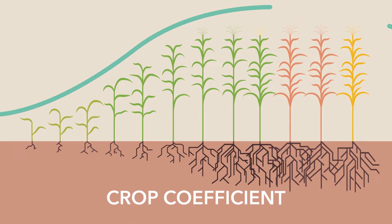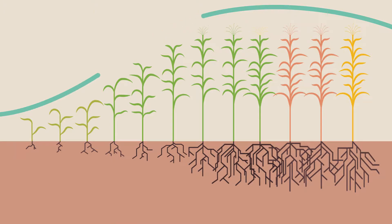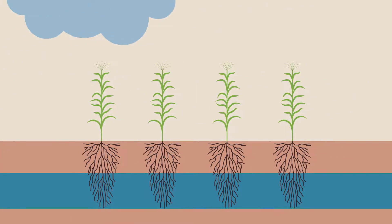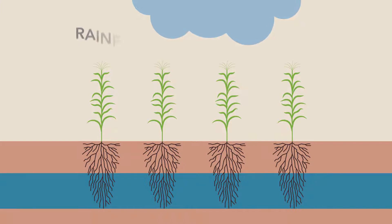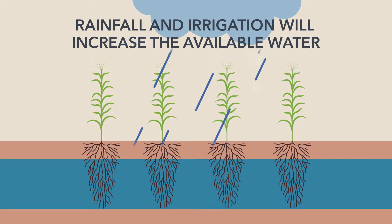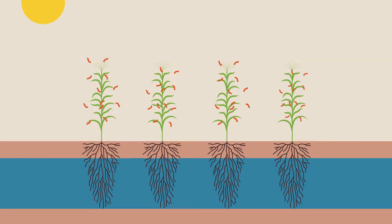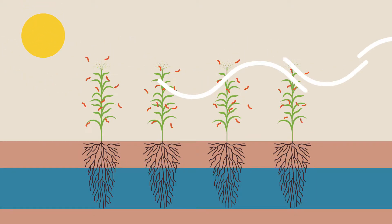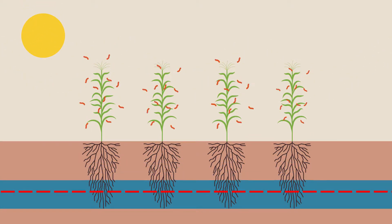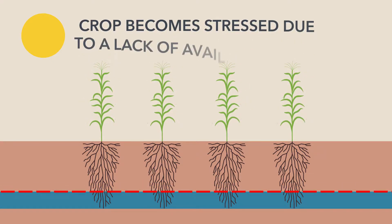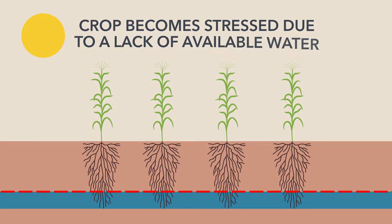The crop coefficient will vary daily as a crop matures through different growth stages. Just as crop water usage decreases the available water in the soil, rainfall and irrigation will increase the available water. However, without adequate rainfall to replenish the crop's daily ET, the available water balance will approach a point where the crop becomes stressed due to a lack of available water.